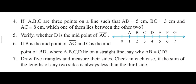Now this is question number 6. If B is the midpoint of AC and C is the midpoint of BD, and A, B, C, D are located on a straight line, then show whether AB is equal to CD. So let us find out.